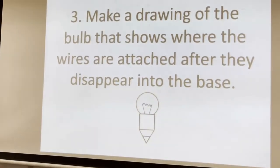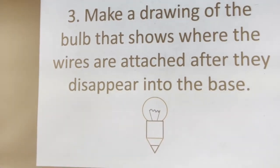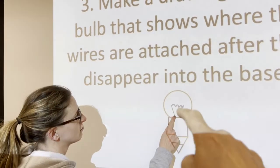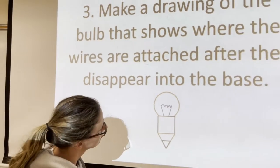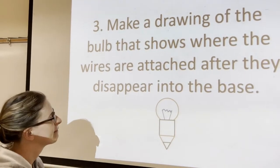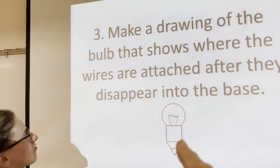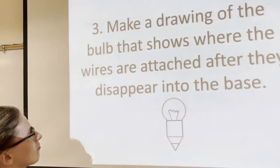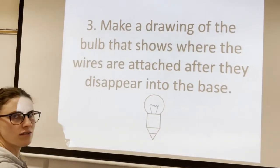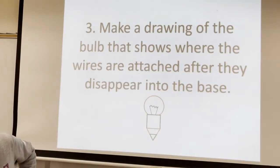Here's a challenge for you as homework: you've got these two wires inside the bulb and they disappear down into the base. Where are those two wires attached inside the base? Make a drawing of the bulb — the circle, rectangle, triangle, the threaded body — and figure out where those two wires connect in the base. Take a shot at it.